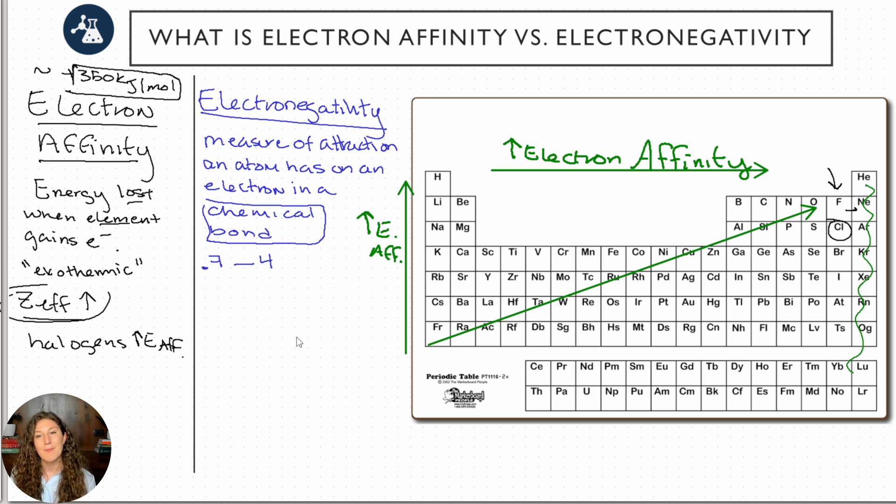So this is measuring how much pull do I have when I'm bonded. And so if we have two atoms that are the same, we're going to have the same electronegativity, they're going to be balanced out. But if we have two atoms where one is a higher electronegativity than the other, we're going to have an imbalance. That higher electronegativity is going to pull the electrons towards itself. For example, if we have carbon-carbon, equal pulls, right, equal atoms, equal pulls.